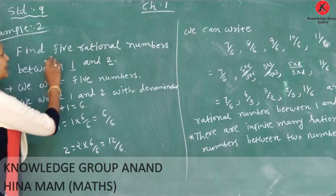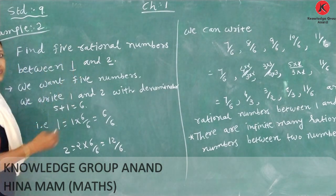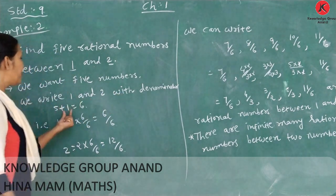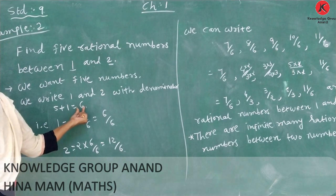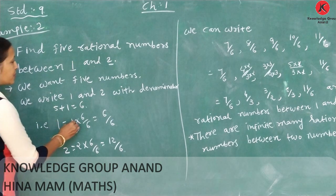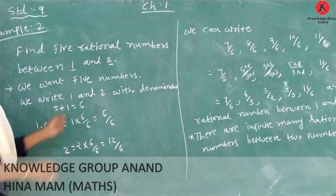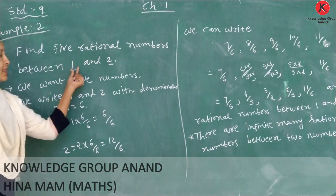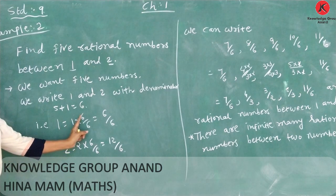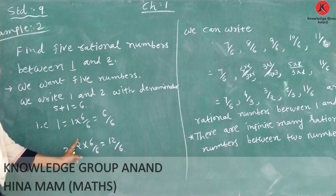We take the denominator as 5 plus 1, which equals 6. Therefore, 1 is equal to 1 multiplied by 6 over 6, which equals 6 over 6. We want the denominator to be 6, so 1 equals 6 over 6.